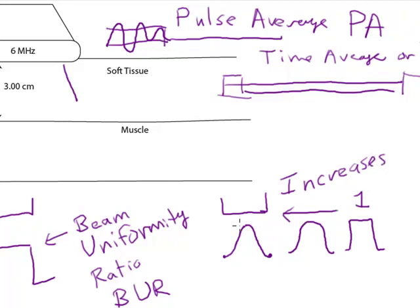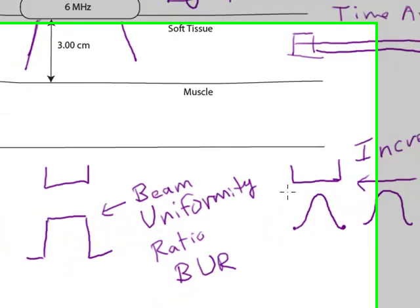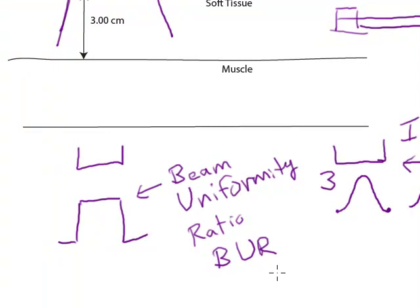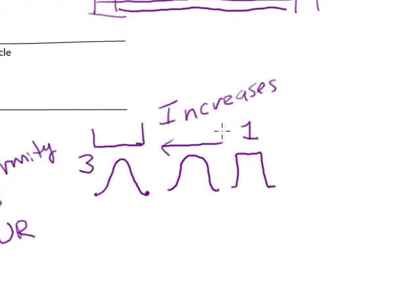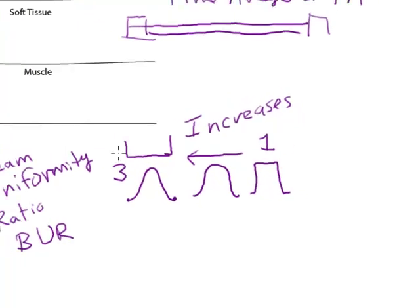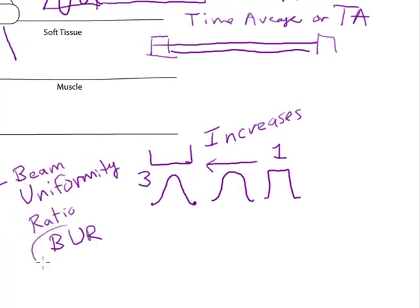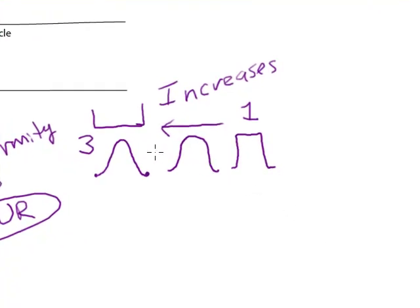So the non-uniformity increases. And so let's say that over here, we might have a non-uniformity as high as three. So really the beam uniformity ratio is more a measure of non-uniformity than uniformity, where one would equal a perfectly uniform beam. And then as number gets larger, the uniformity is worse.